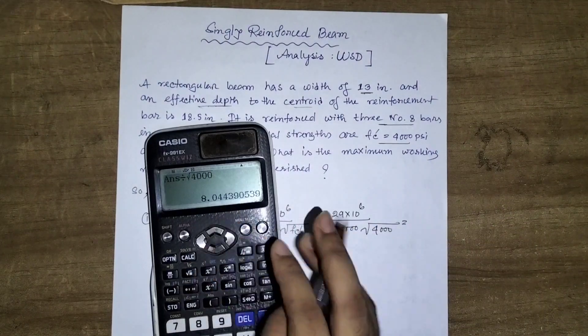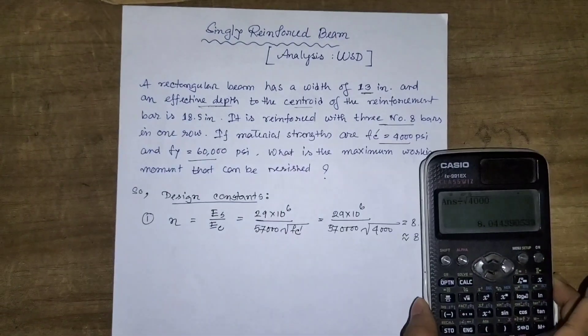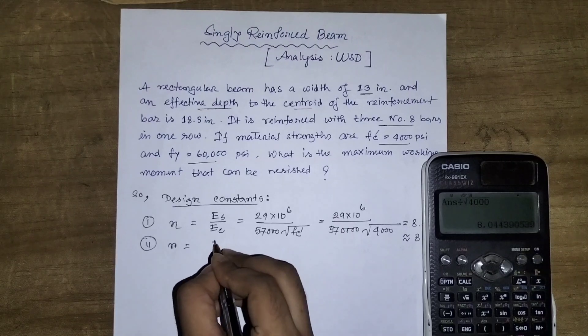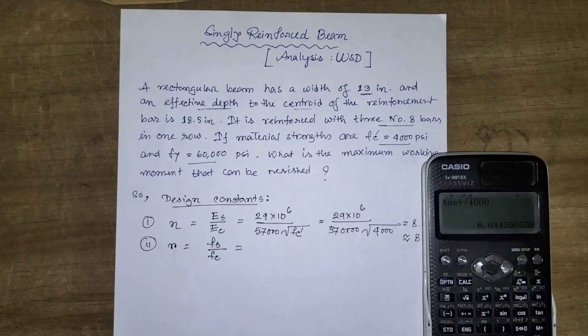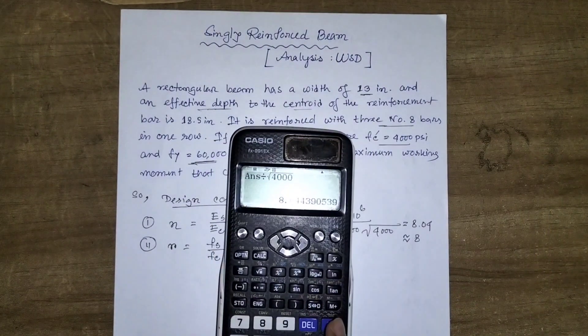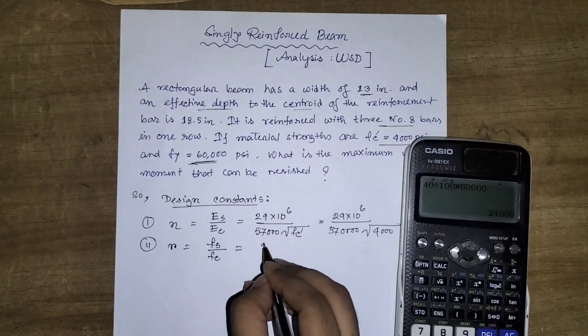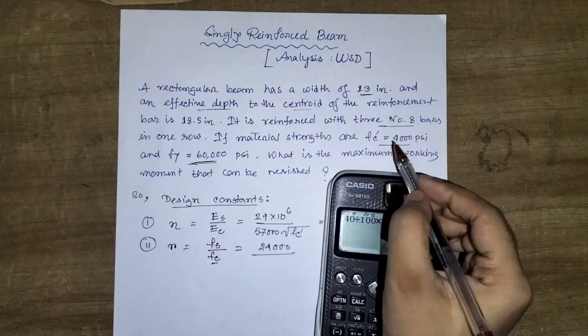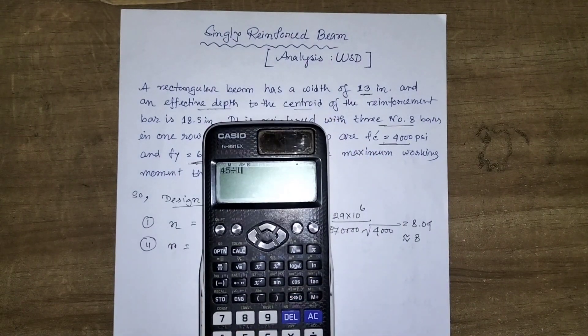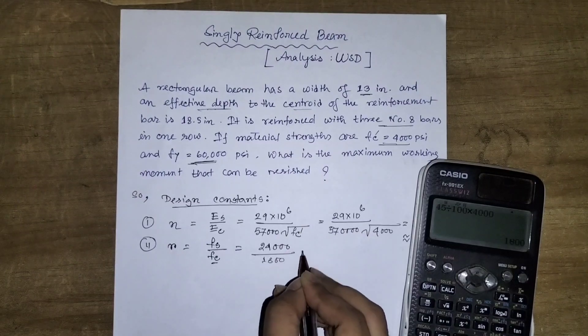This equals 8.04. Now for the k value, which is the ratio f_s by f_c. The allowable steel strength is 40 percent of fy, so we're using 40 percent times 60,000, which is 24,000 psi, divided by f_c which is 45 percent of f'c prime concrete strength.